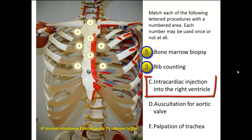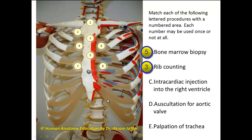Which area is used for intracardiac injection into the right ventricle? We have to remember the surface anatomy of the heart. The right ventricle forms most of the anterior surface of the heart and is located at the fourth intercostal space on the left side of the sternum. The right atrium is located to the right side of the sternum.